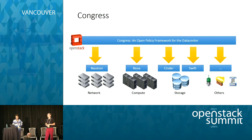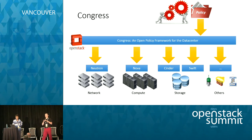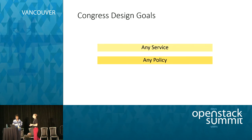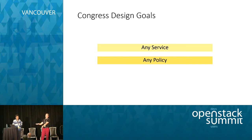The second input you give to Congress is a policy. The policy describes how those services ought to behave — it says what should happen, the desired state. The services allow Congress to understand what actually is happening. Congress's job is to make what is happening coincide with what is supposed to happen. You tell us what is supposed to happen and we figure out how to make that happen.